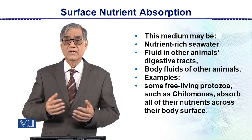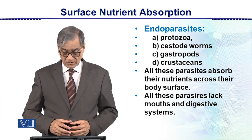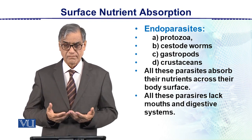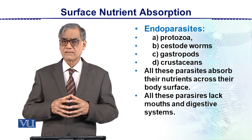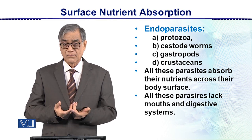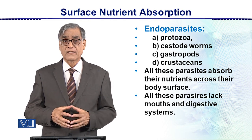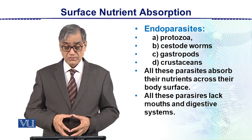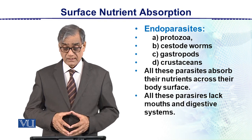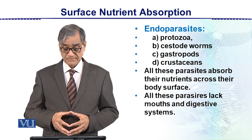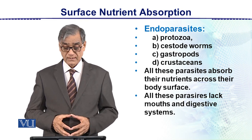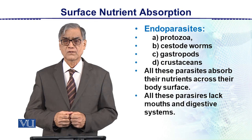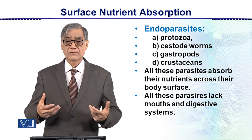There are certain animals which live as parasites — organisms which depend upon other animals for food and shelter. These animals are always of different species. These endoparasites may be protozoans, cestode worms, gastropods, or crustaceans. All these parasites absorb their nutrients across their body surface, which is why there is no specialized digestive system.